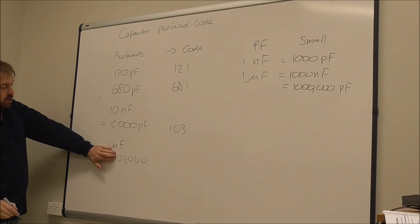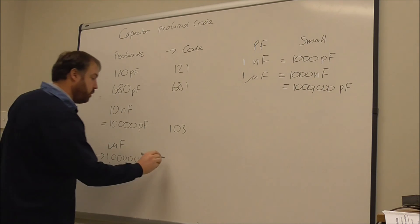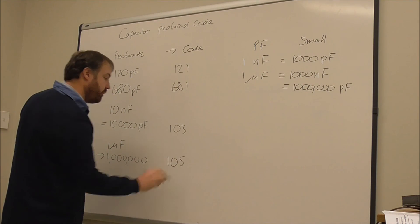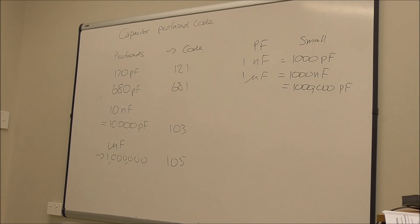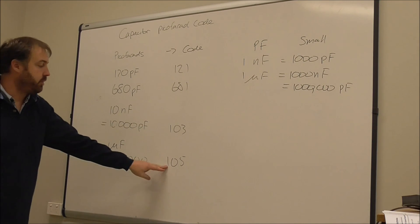Which is 10 followed by 5 zeros, so it would be 105. So a picofarad code for a 1 microfarad, which is 1,000,000 picofarads, would be 105.